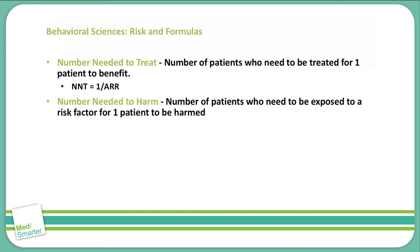Number needed to harm is different — it represents how many patients need to be exposed to a risk factor before one is harmed. The number needed to harm is calculated as 1 divided by the attributable risk. So we take our previously calculated attributable risk and apply it here to find the number needed to harm.